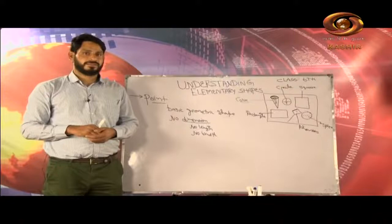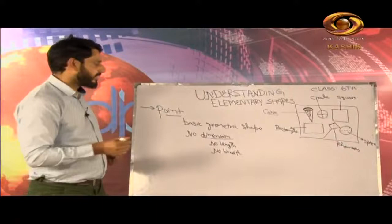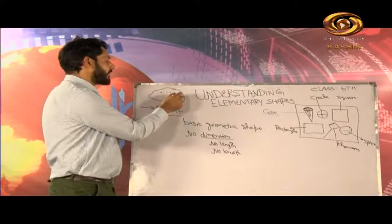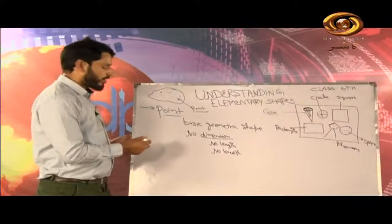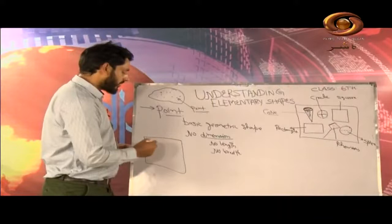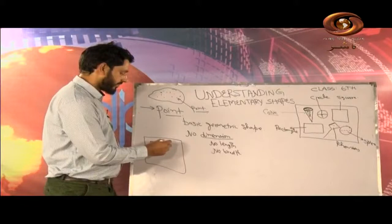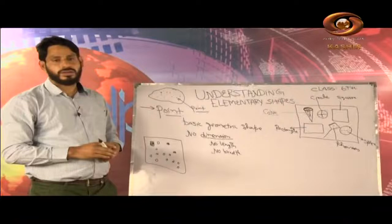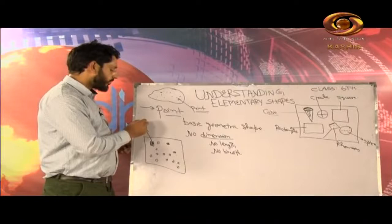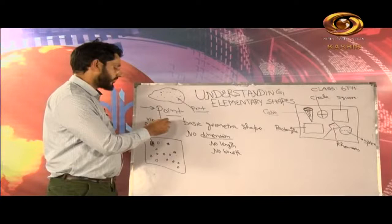So, why does this point appear in real life? If we look at a starry night, the stars represent the points — we can say each star is a point. Or, if we look from a higher altitude, maybe we are in an aeroplane or at some high mountain peak. When we look downwards, the houses or the objects look like very basic points, because we are at a high altitude and the distance between us and the lower objects is much more.